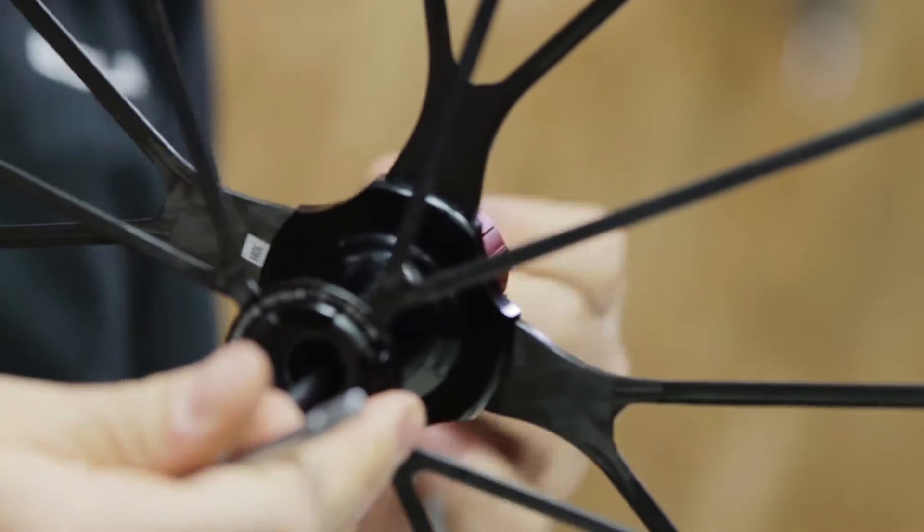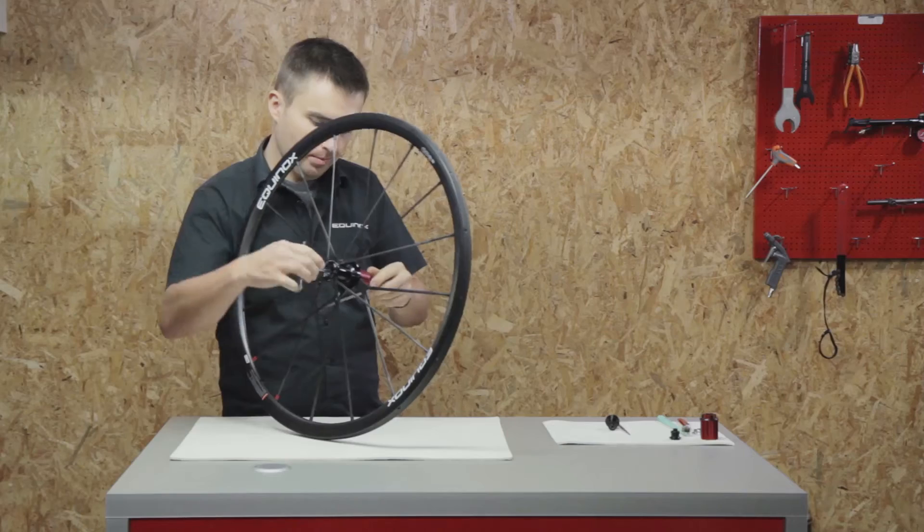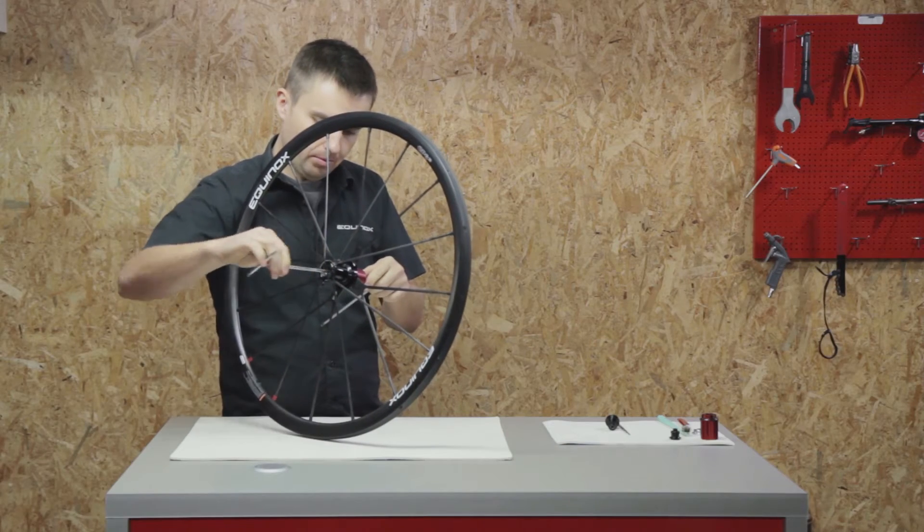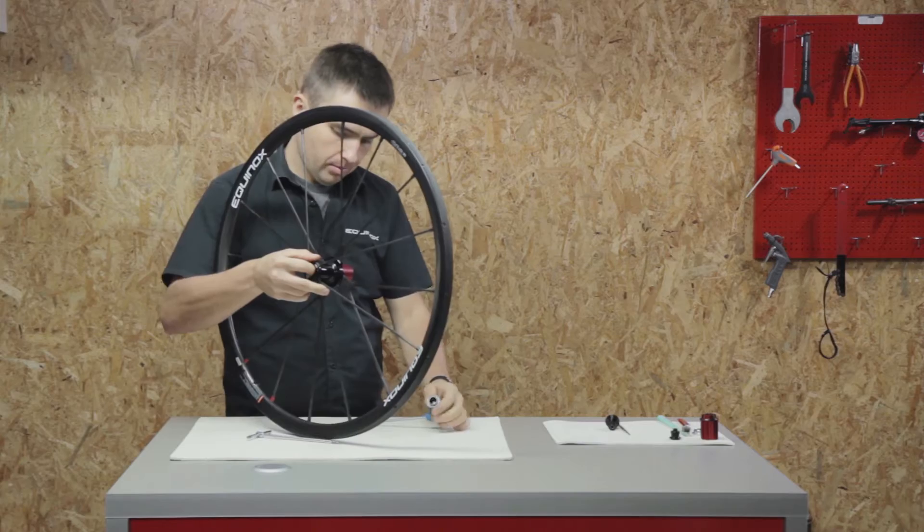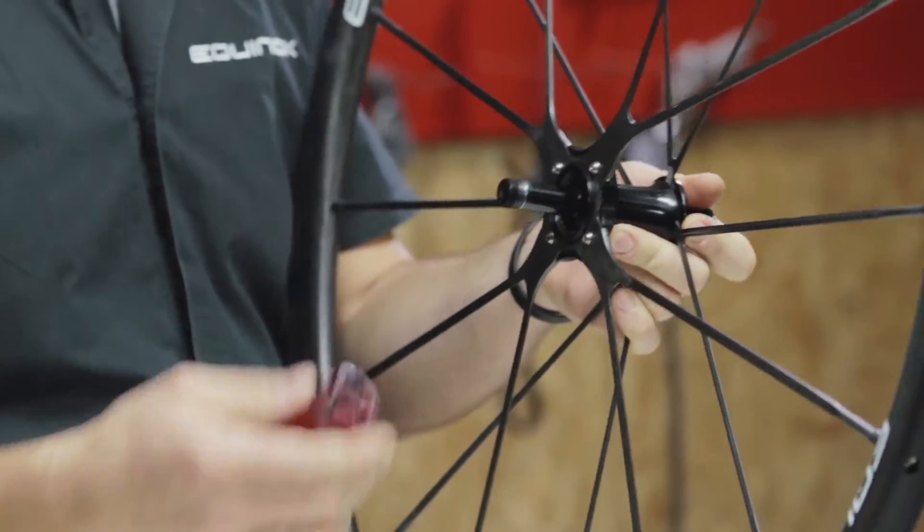One inside the axle, the other outside, and twist both in opposite directions. Now you're able to remove the cassette body.